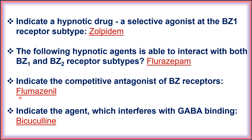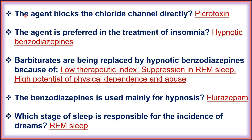Flumazenil is also used in the treatment of benzodiazepine poisoning. The agent that interferes with GABA binding is bicuculline. The agent that blocks the chloride channel directly is picrotoxin.